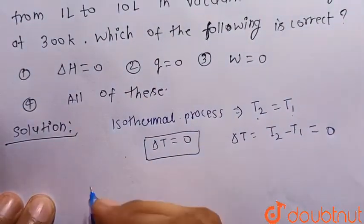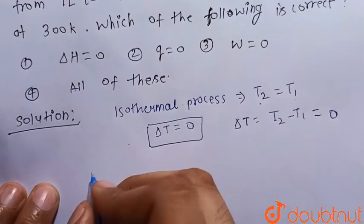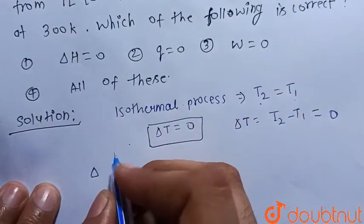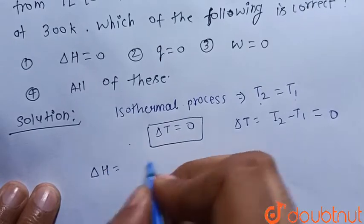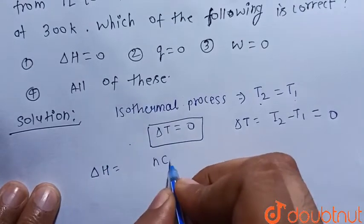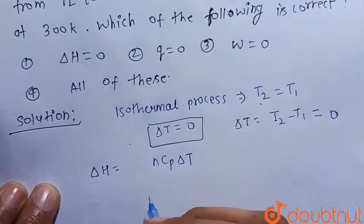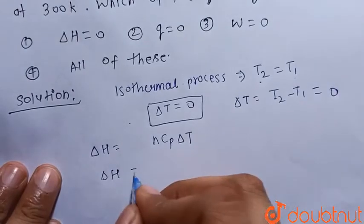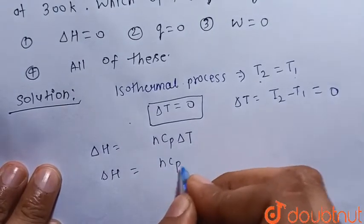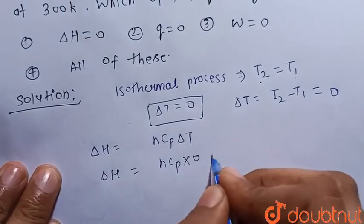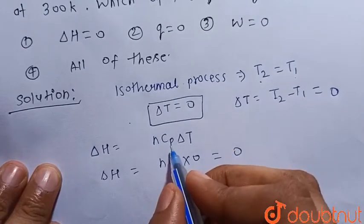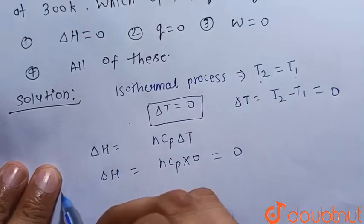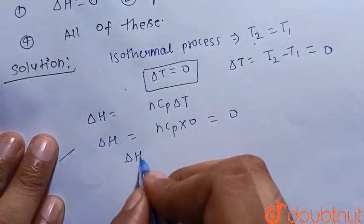For an isothermal process, delta T = 0. We know that delta H = N·Cp·delta T. Since delta T = 0, delta H = N·Cp × 0 = 0, where Cp is the molar heat capacity at constant pressure. So delta H is also equal to 0.